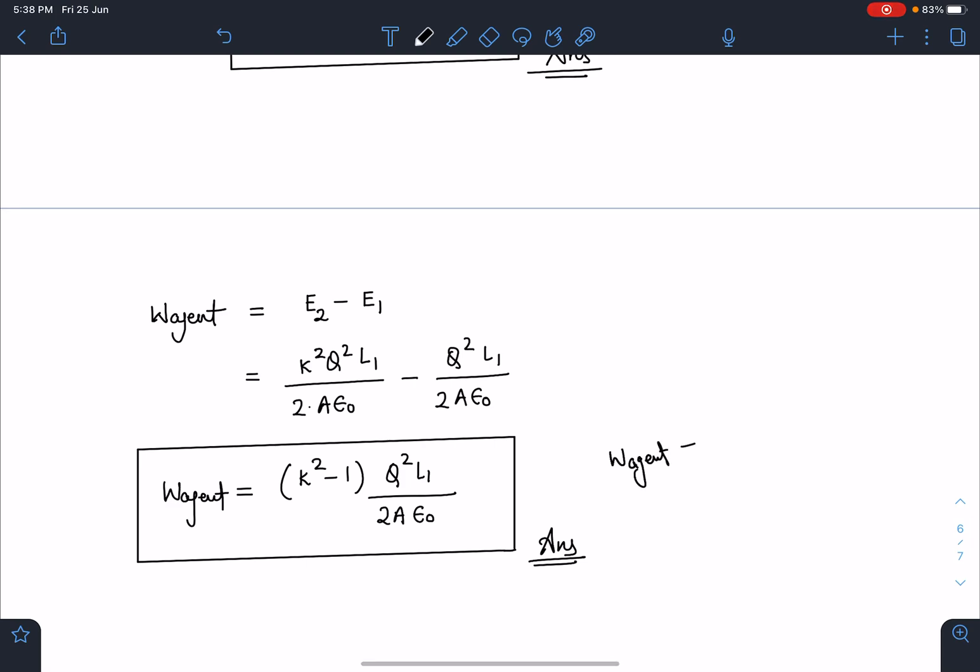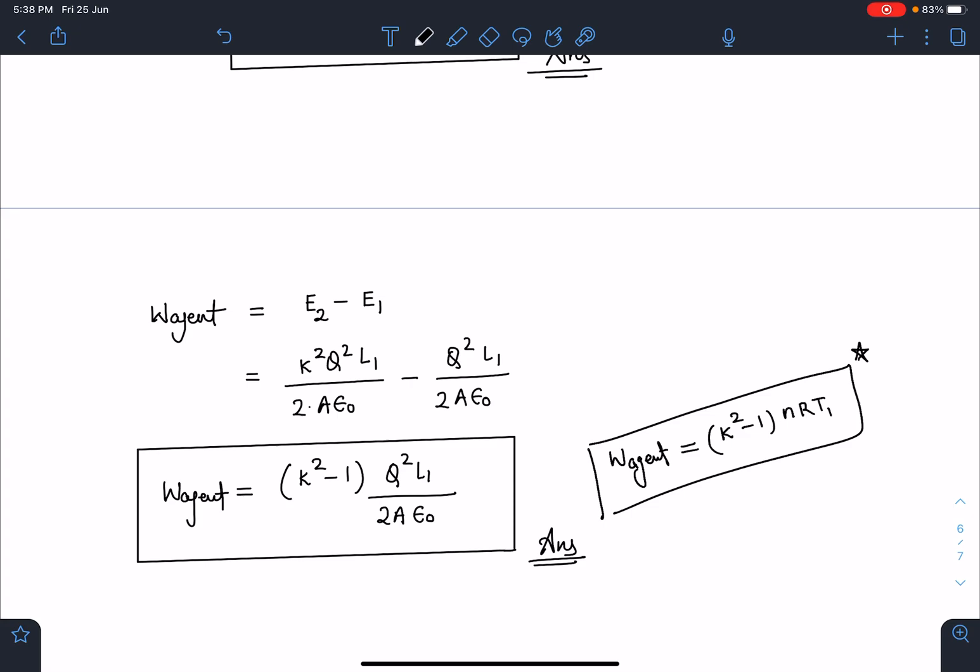This will become k squared minus 1 times NRT1 so if initial temperature is given we can write W agent or initial separation will be given to us so this is how W agent will be calculated.